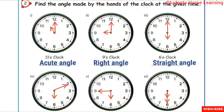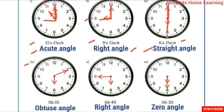Find the angle made by the hands of the clock at the given time. First one — 11 o'clock. Mark the short hand at 11 and the long hand at 12. This angle is a V-shape, which is an acute angle. Next one — 6 o'clock. The short hand is at 6 and the long hand is at 12. When the two hands are straight, it is a straight angle.